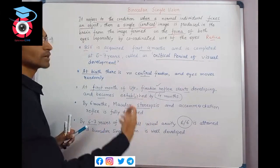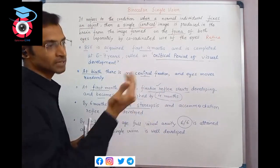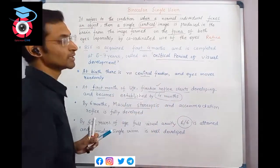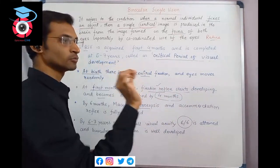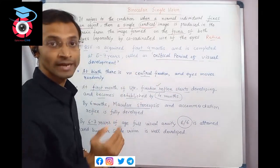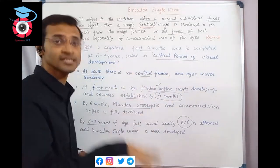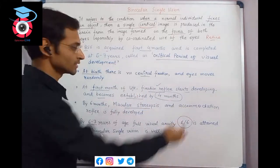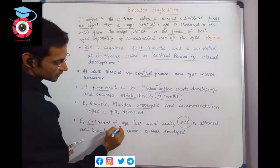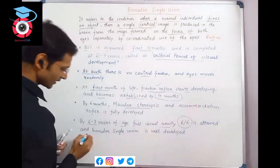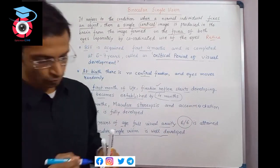So what is accommodation? When we look at objects at distances of one meter, two meters, three meters, we focus on them. The lens changes curvature to accommodate the different distances. Accommodation is fully complete by six to seven years of age, at which point full visual acuity and binocular single vision are well developed.